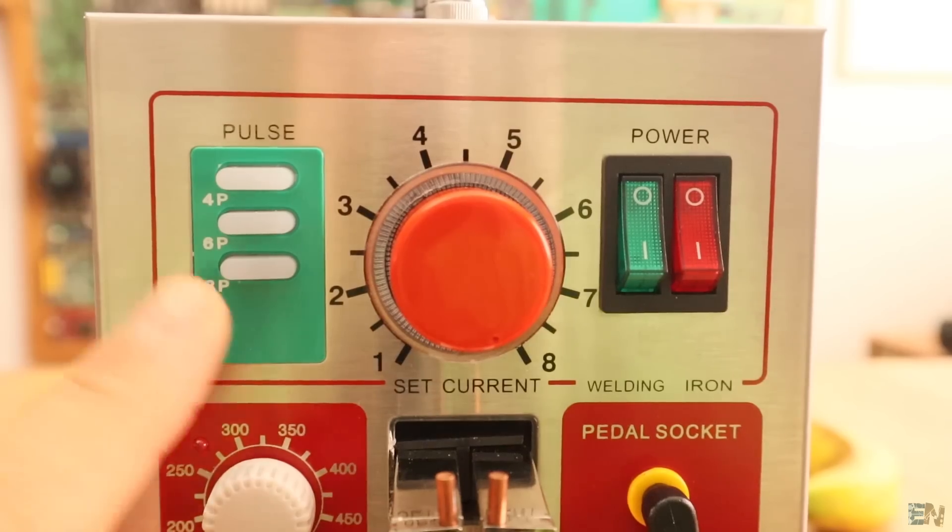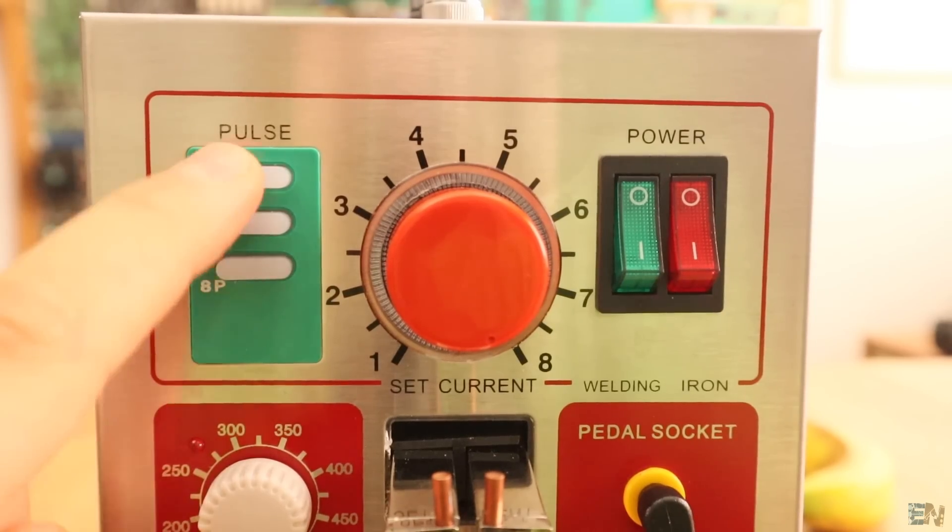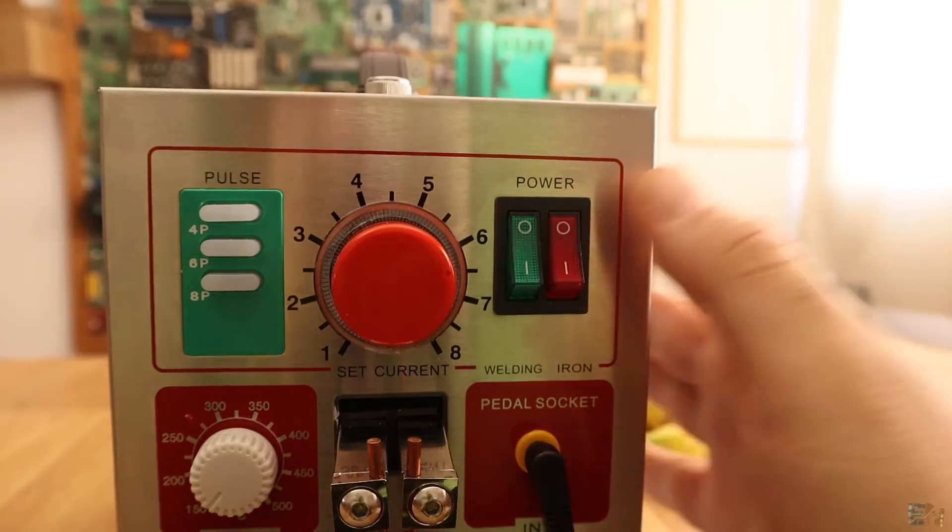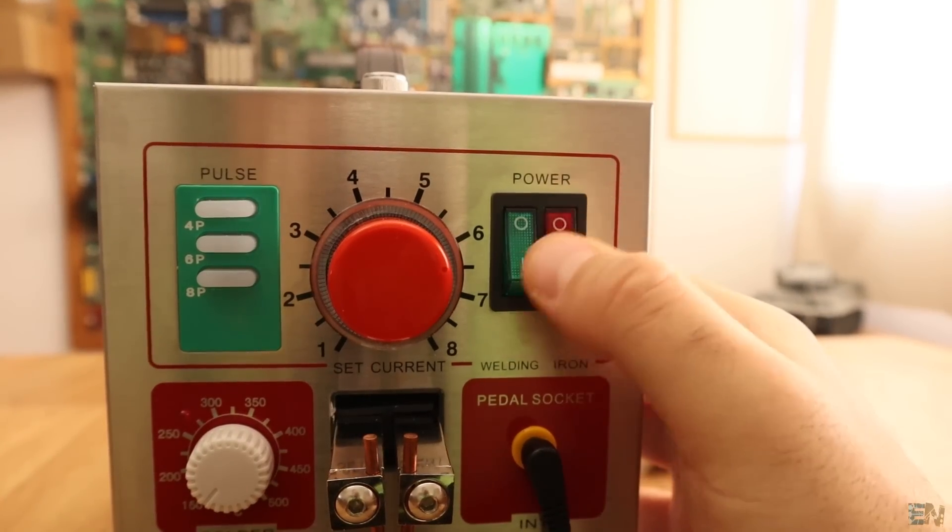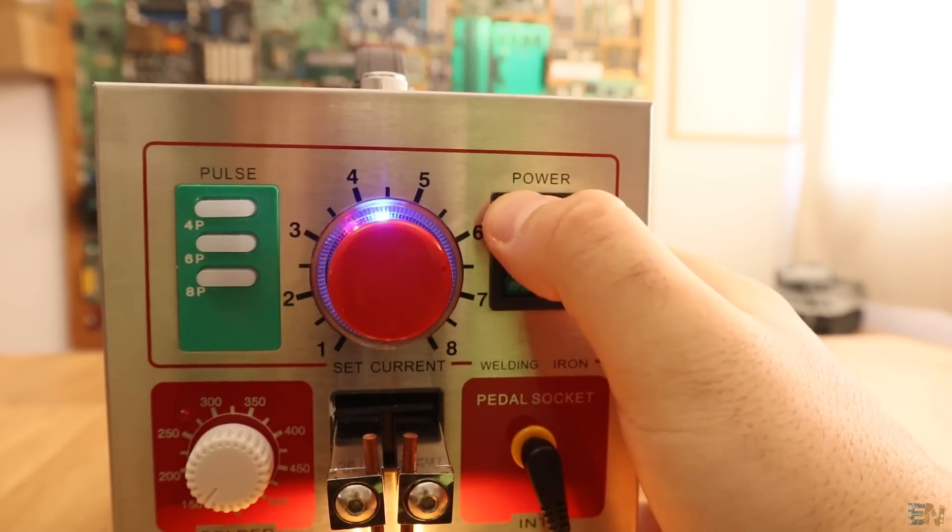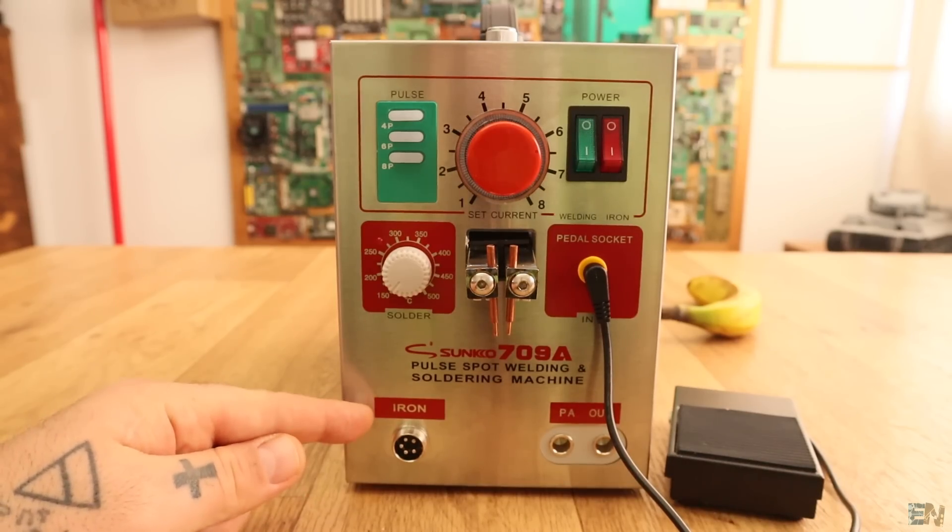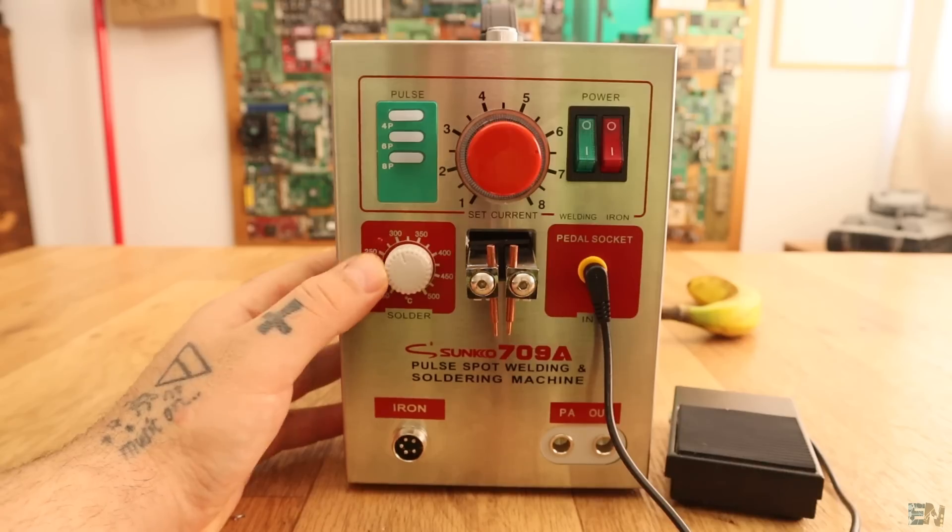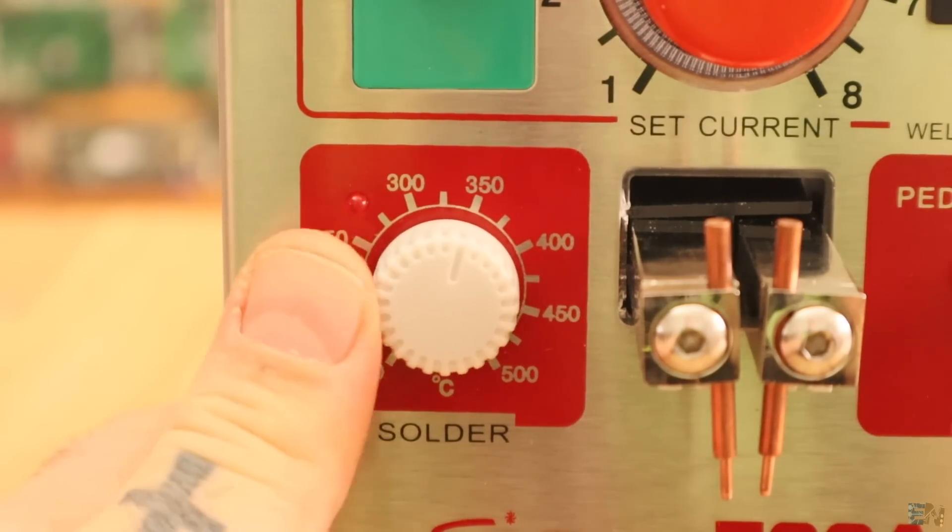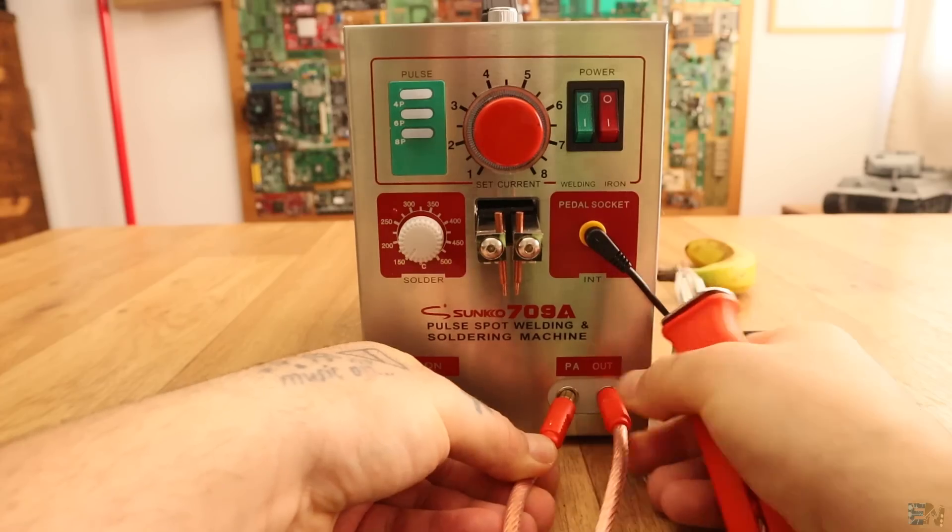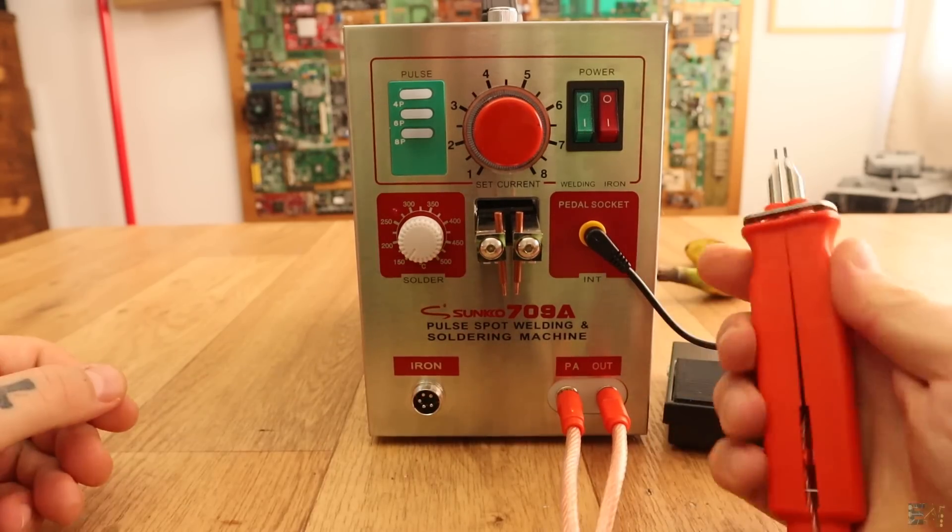These are used to select the pulse mode, where we could deliver 4, 6 or 8 discharges pulses in a row. On the right side, we have the on and off switch for the spot welder but also for the soldering iron, which by the way, here we have a plug for the iron and also the temperature knob in order to set a certain value. On the right bottom corner, we have the output for the extension tool in case you want to solder something aside of the station case.